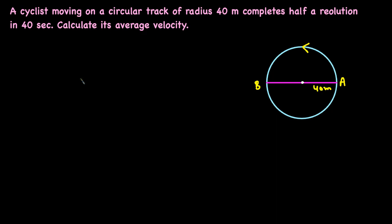A cyclist is moving on a circular track of radius 40 meters. The radius is shown here. The cyclist moves from point A to point B, and in 40 seconds completes half a revolution — meaning starting at A, going along half the circle and arriving at B.